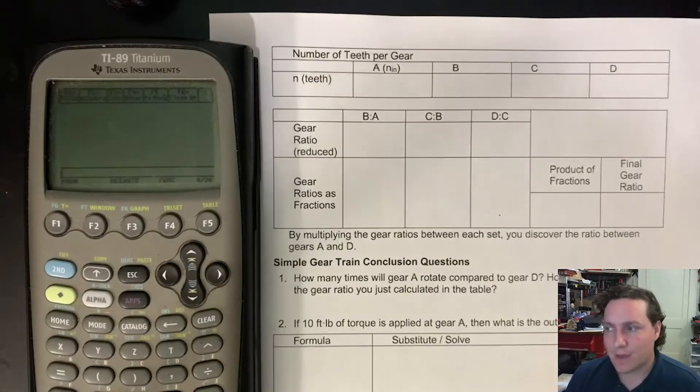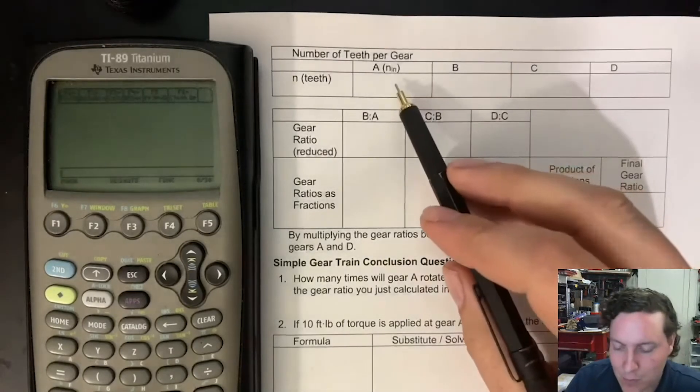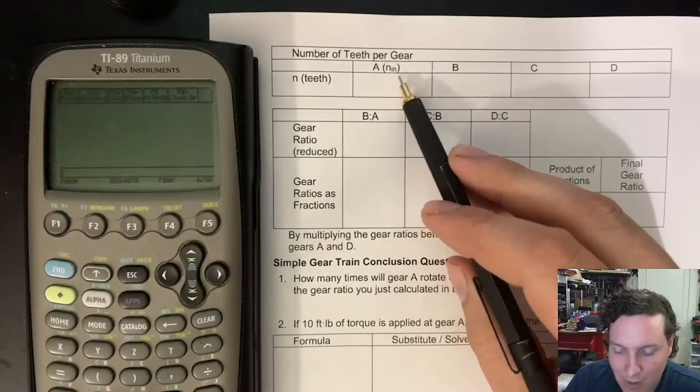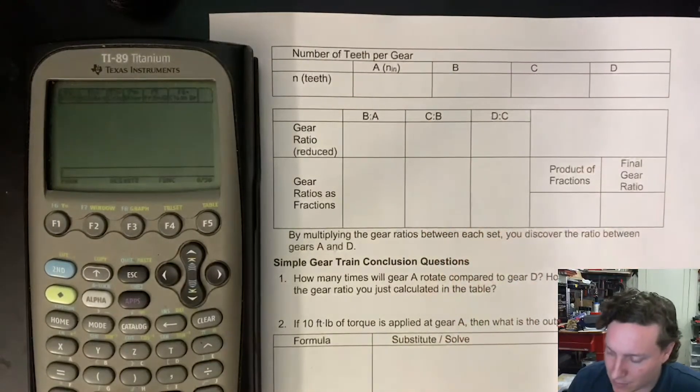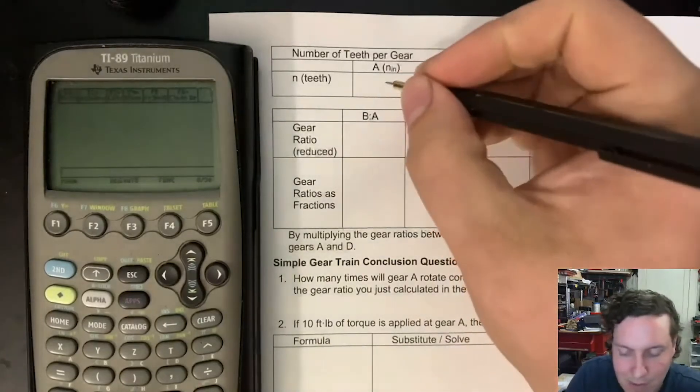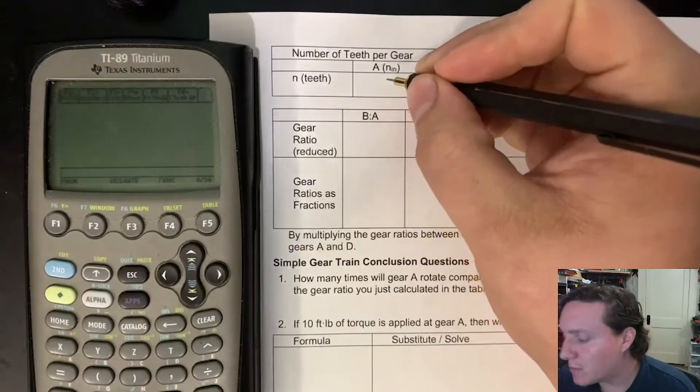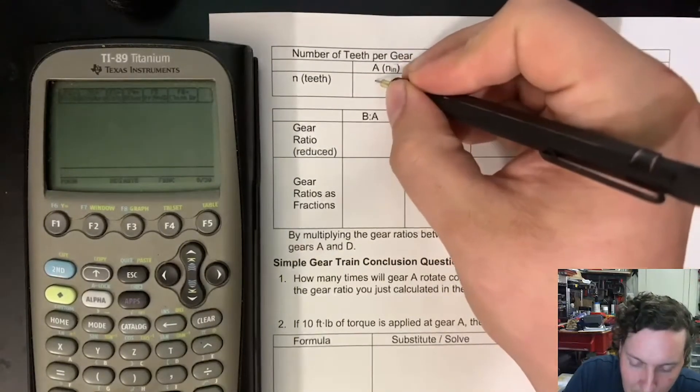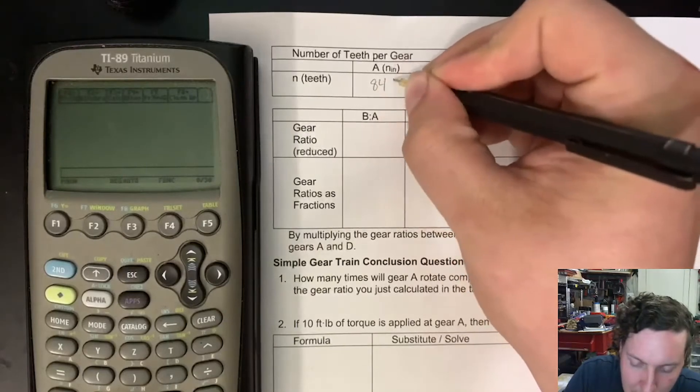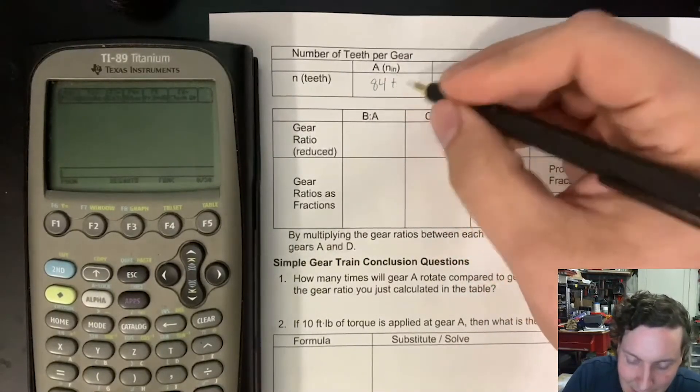To get us started, we're going to have to pull out some of those measurements. We're going to say that A, which will be our input, our driver, going through D. Because we know there are four sizes to work with, we're going to use every single one of them. We'll get started with the largest gear where we know that it has 84 teeth, using lowercase t to indicate teeth.